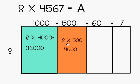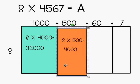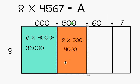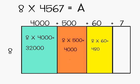Next, I move to the hundreds. 8 times 500 equals 4,000. The area of this part of the rectangle is 4,000. Moving on. 8 times our tens. 8 times 60. 8 times 60 is 480. And finally, I move to the ones. 8 times 7 is 56.